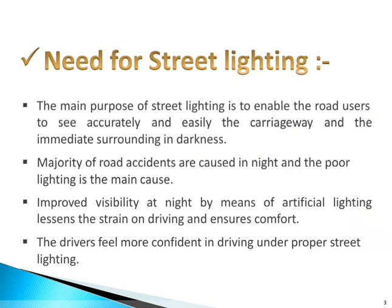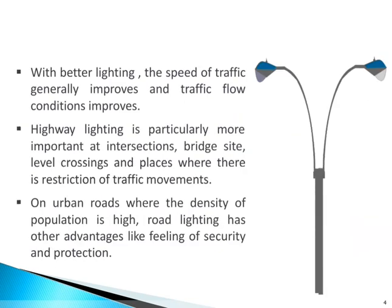The main purpose of street lighting is to enable the road user to see accurately and easily the carriageway and the immediate surroundings in the darkness. The majority of road accidents are caused at night, and poor lighting is the main cause. Improved visibility at night by means of artificial lighting lessens the strain on driving and ensures comfort. The driver feels more confident driving under proper street lighting, and with better lighting, the speed of traffic generally improves and traffic flow conditions improve. Highway lighting is particularly more important at intersections, bridge sites, level crossings, and places where there is a restriction of traffic movement.